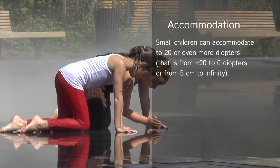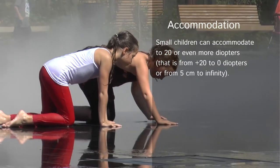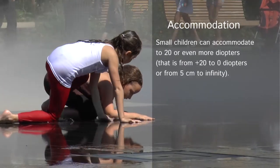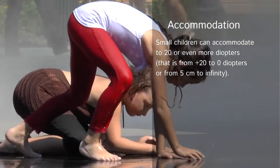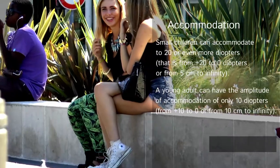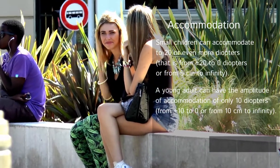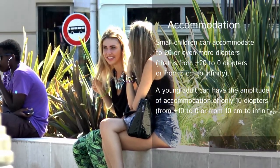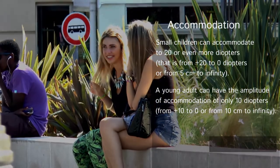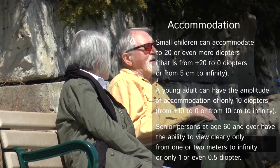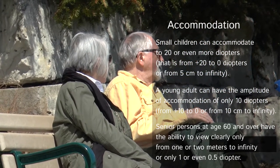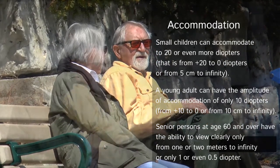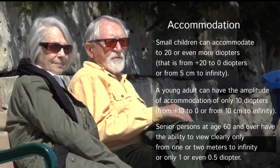The ability to focus on nearby objects declines throughout the person's life. Small children can accommodate to 20 or even more diopters, that is, from plus 20 to zero diopters, or from 5 cm to infinity. A young adult can have the amplitude of accommodation of only 10 diopters, from plus 10 to zero, or from 10 cm to infinity. Senior persons at age 60 and over have the ability to view clearly only from 1 or 2 meters to infinity, or only 1 or even 0.5 diopters.